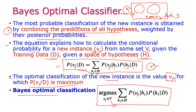V is nothing but the whole population. From the whole population we need to pick only one vj, and hi is the hypothesis for that particular instance belonging to the entire hypothesis space H. So P(vj | hi) times P(hi | D) gives the formula for Bayes Optimal Classification.